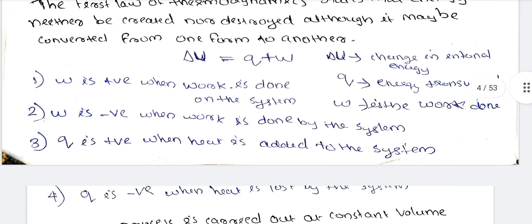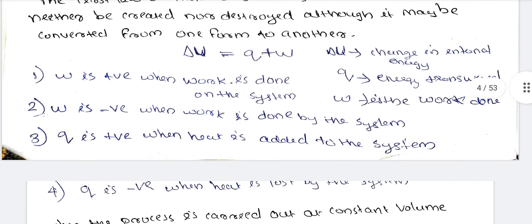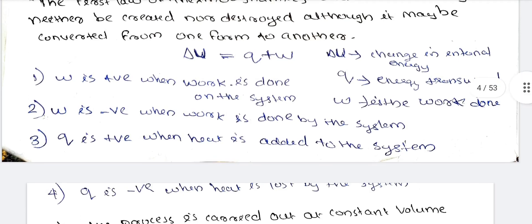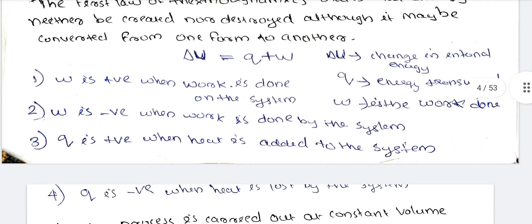W is positive when work is done on the system. W is negative when work is done by the system.